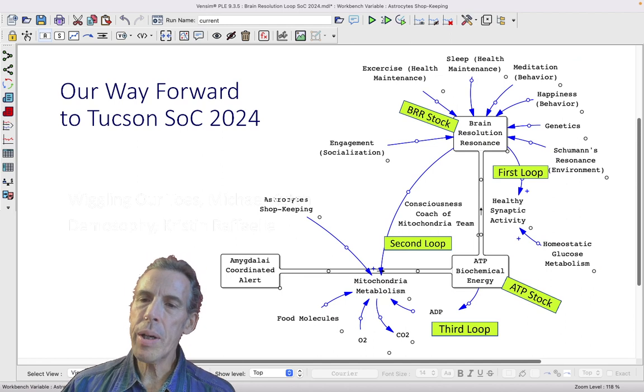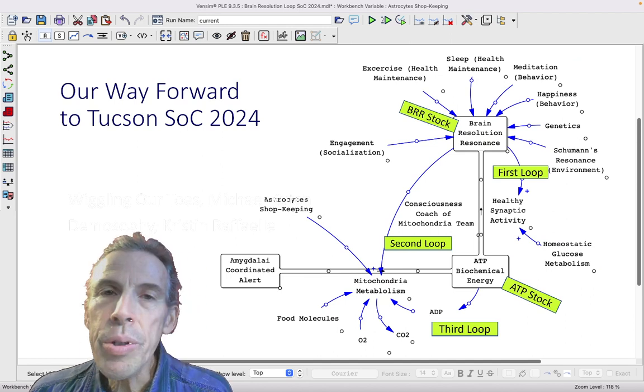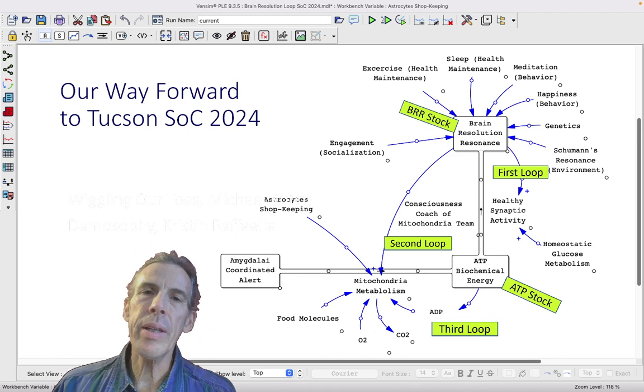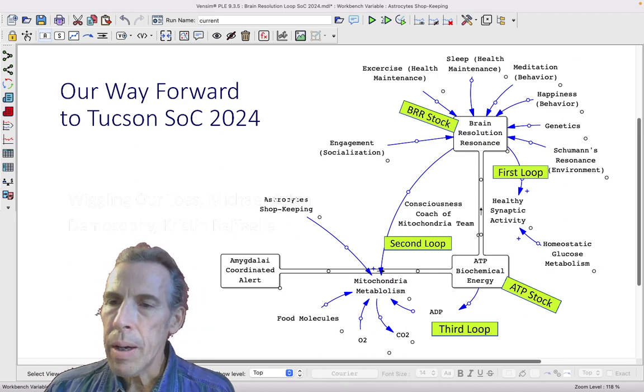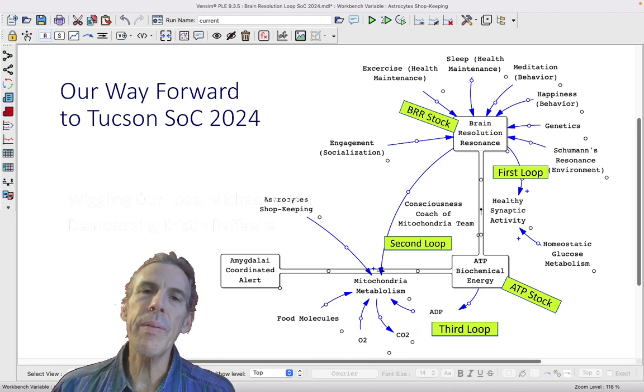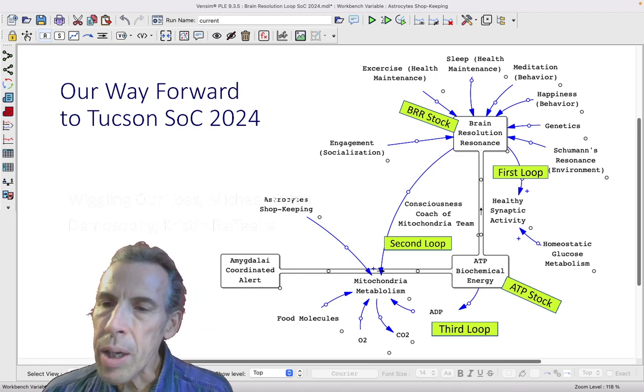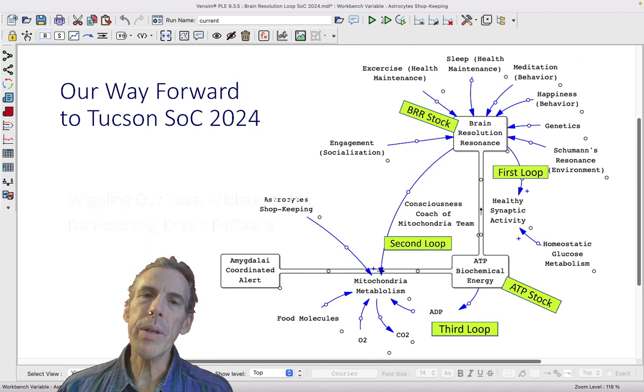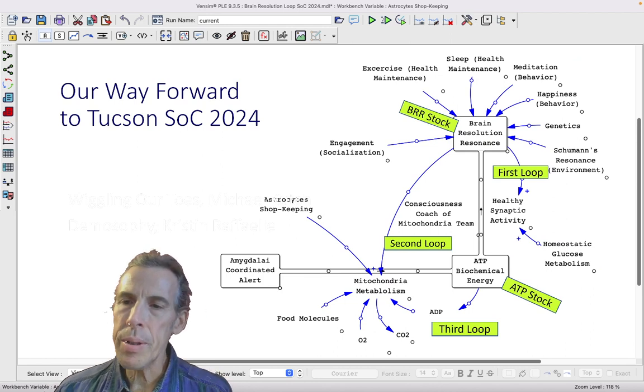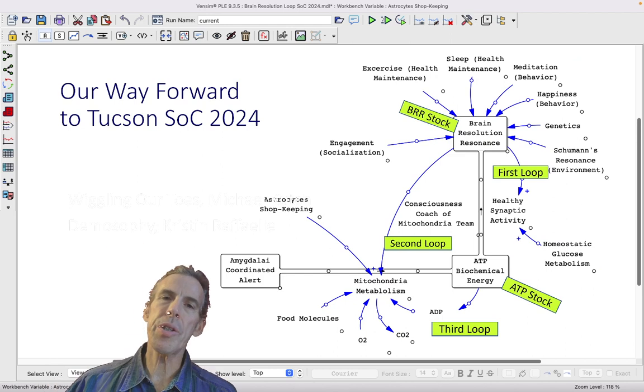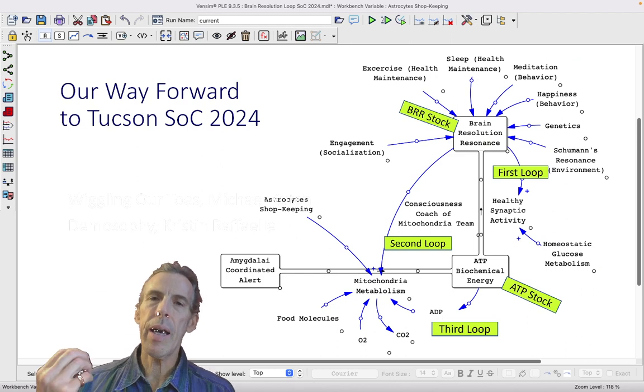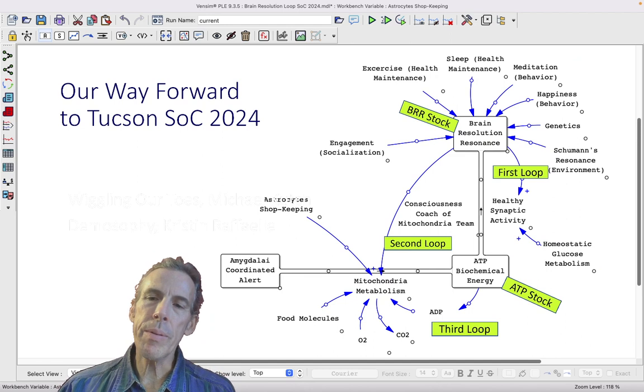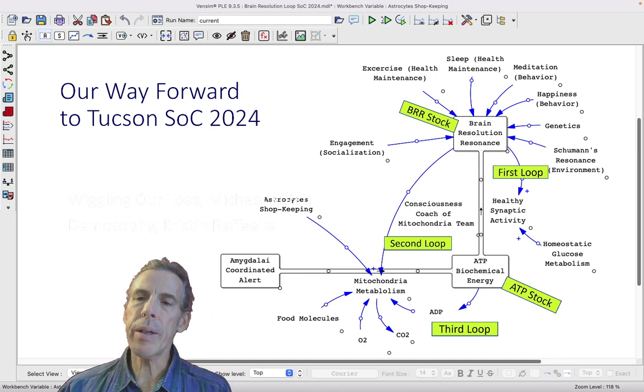And we need to drill down here again where we're going to put into three places. There's the brain resolution resonance, the healthy synaptic activity that allows that flow that comes from the ATP biochemical energy. And that will have an equation, that flux or flow allowance. The ATP biochemical energy is a stock that we invest in, and that will have an equation. As well as prior to that, the metabolism of the mitochondria.